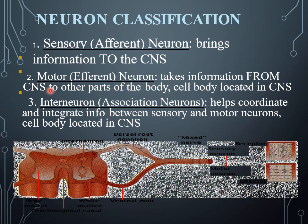Interneurons are also known as association neurons. They are involved in the coordination and integration of information between the afferent sensory neurons and the efferent motor neurons.